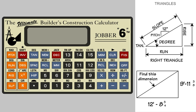This example is found on page 17 of the Jobber 6 user manual. Clear or turn on the calculator. Enter 12 feet 8 and 3 quarter inches. We tell the calculator this is the run by pressing the run key.